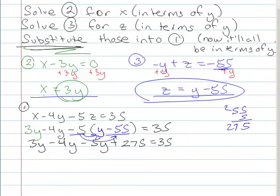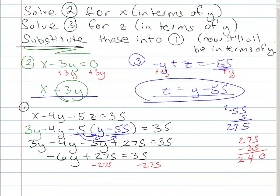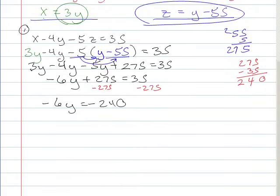Now I'll combine like terms. So I have 3 minus 4 minus 5, which is going to give me minus 6y plus 275 equals 35. So I'll subtract 275 from both sides. So making sure I do the signs right. I've got negative 6y equals negative 240. Now divide both sides by negative 6, and I get y equals 40.